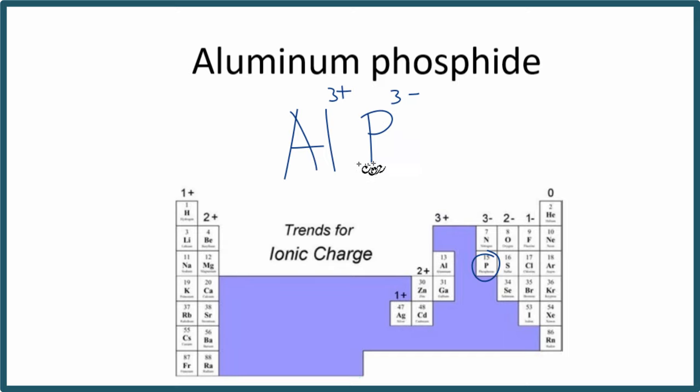So since they're the same, we would end up with a 3 and a 3 down here when we did the crisscross. And we can reduce those, since they're the same, to 1. We don't have to write that aluminum phosphide, AlP.